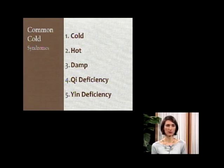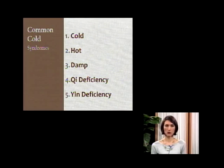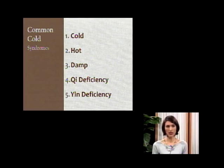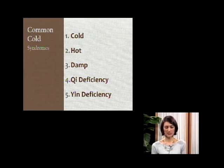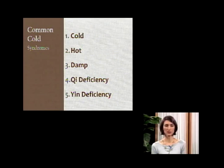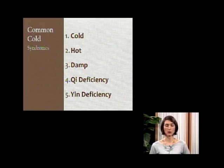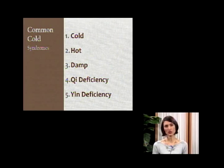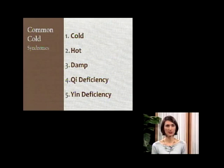We can also take the pulse — it may be floating again, and a little fast, because fast indicates heat in the body. Hot cold and cold cold are the two most common types of colds. You would not want to give cold herbs to a person with a cold cold and hot herbs to a person with a hot cold. For example, taking two herbs you may have in your kitchen right now: the cold cold would be treated with ginger, because ginger is warming and it releases the exterior. Wind and cold are in the exterior of the body causing cold symptoms, so drinking ginger tea might help ward off a cold cold at the first sign — the sneezing and the clear phlegm.